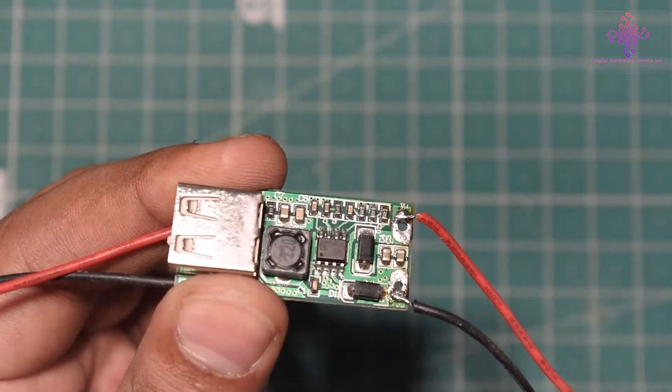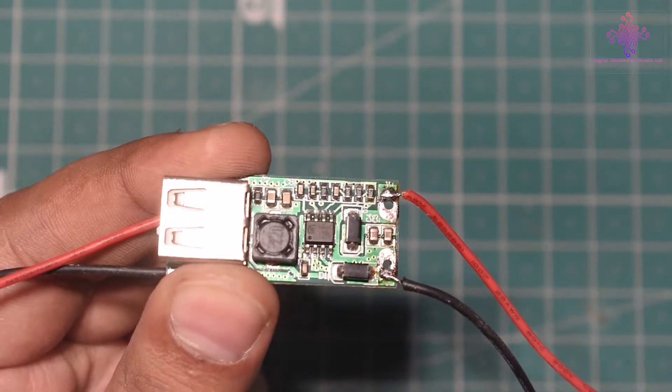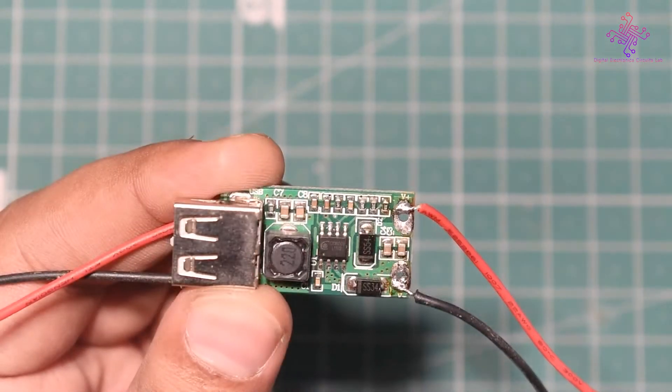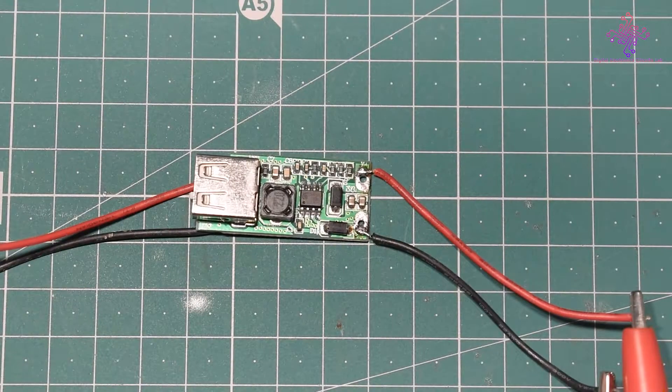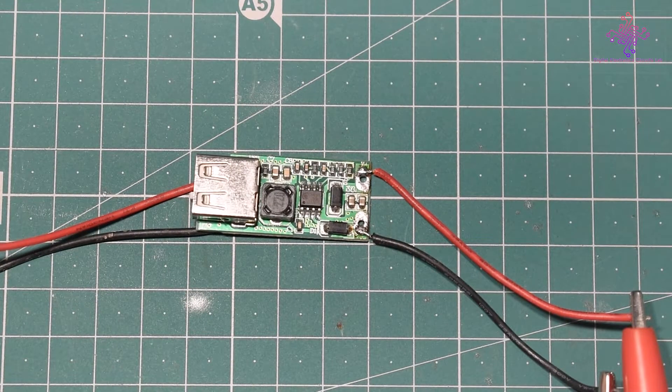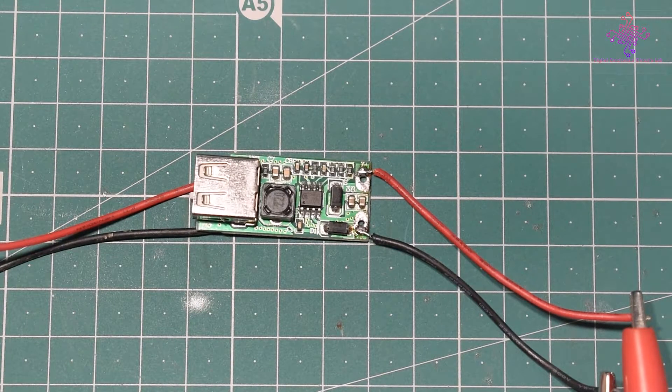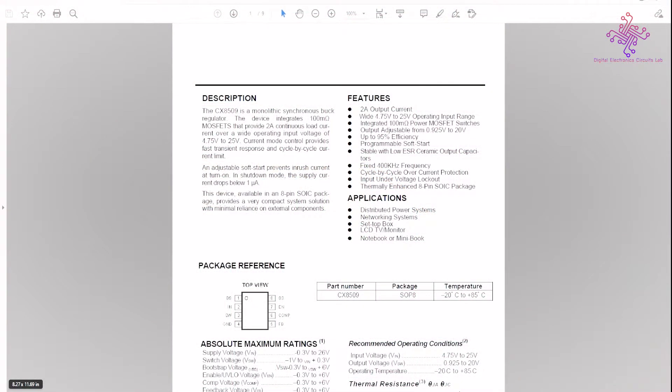If I take a closer look at the board, the chip is actually CX8509. I have searched on the internet for the datasheet of this chip. Here I can see the datasheet - it's a monolithic synchronous buck regulator by Formicro Technology.